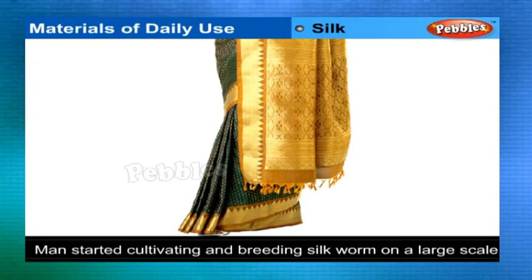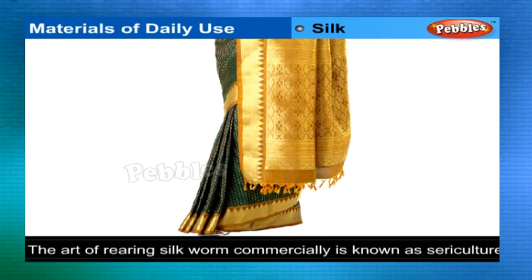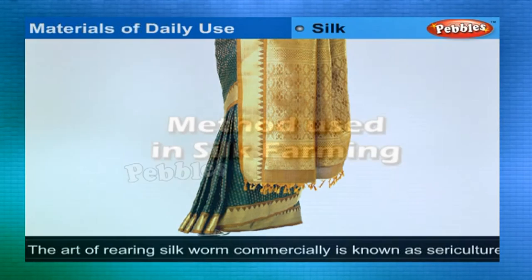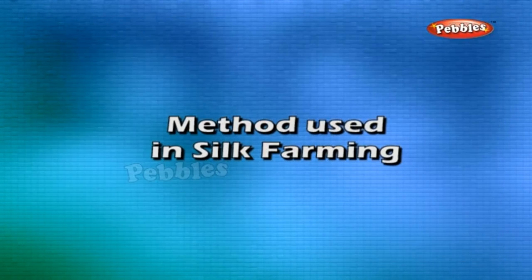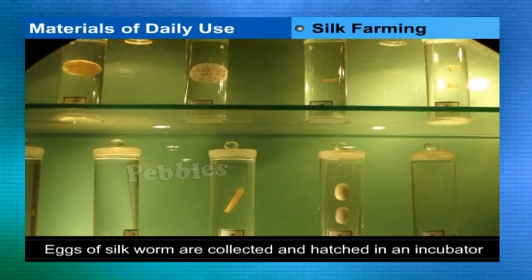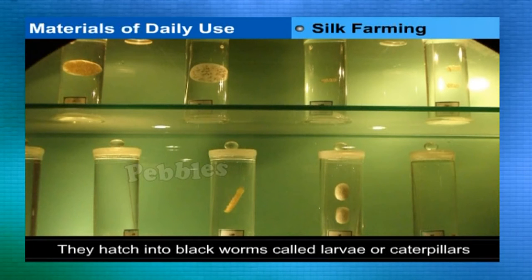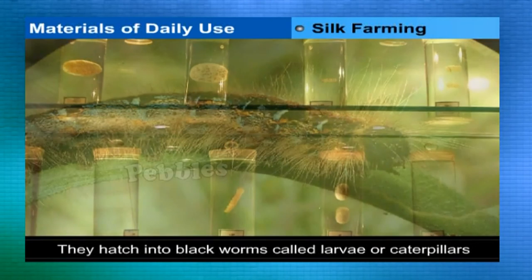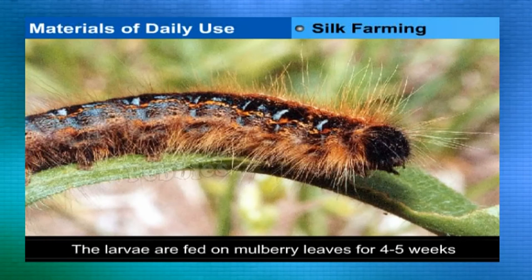Because of its lustrous appearance and other desirable properties, man started cultivating and breeding silkworms on a large scale. This art of rearing silkworms on a commercial scale is known as sericulture. In silk farming, eggs of the silkworm are collected and hatched in an incubator, hatching into black worms called larvae or caterpillars.